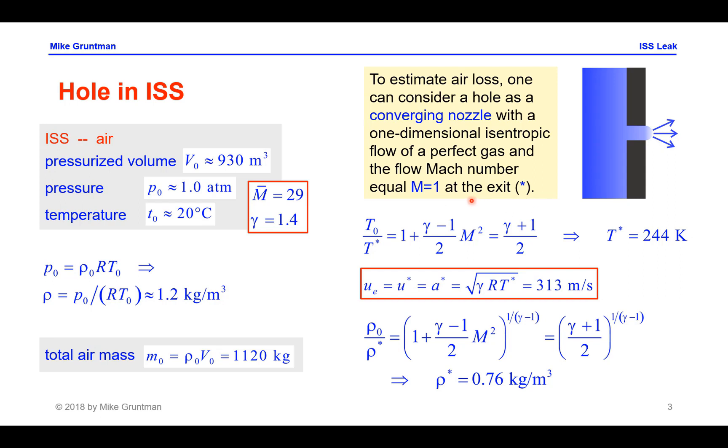Compressible gas dynamics informs us on the properties of the gas at such a configuration. The temperature at the exit would be 244 degrees Kelvin or approximately minus 30 degrees C. This immediately gives us the speed of sound at the exit, which equals the speed of the air leaving the hole, about 313 meters per second. We can also get the equation for the density of the gas at the exit of the hole, which would be 0.76 kilograms per cubic meter.